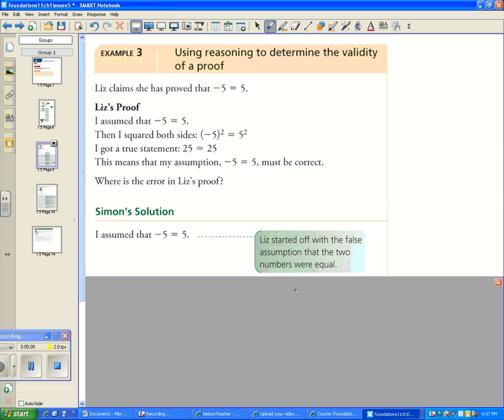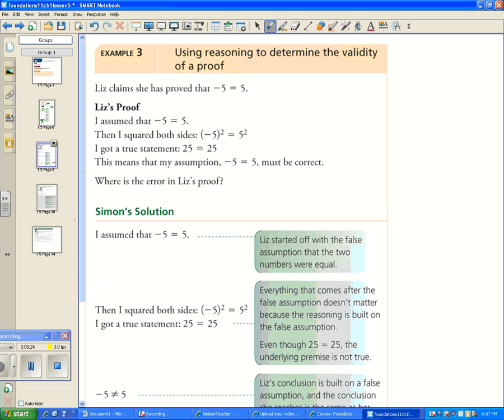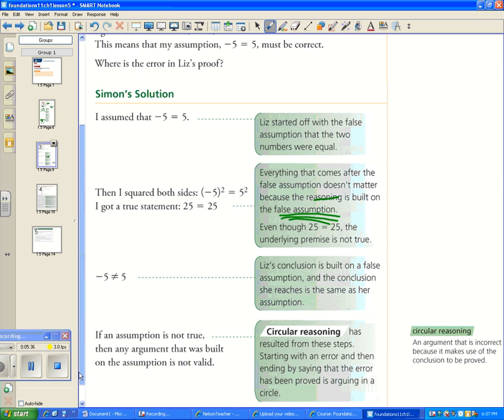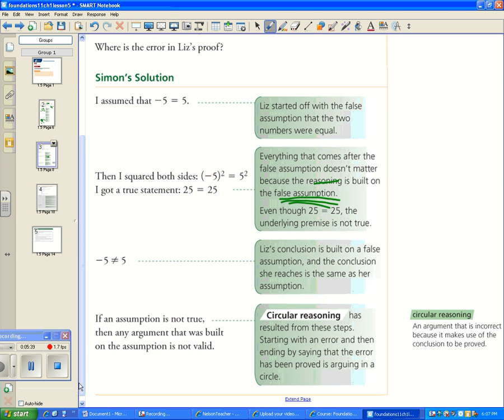Liz started off with a false assumption that two numbers are equal. So right away, by saying something that's false, it's just like if someone starts lying to you, you're not going to believe anything they say after that. She started off with a false assumption. Everything after that was sound, but it doesn't matter because the reasoning is built on the false assumption. So Liz's conclusion is built on a false assumption, and the conclusion she reached is the same as her assumption. If the assumption is not true, then any argument that was built on that is not valid. And this is called circular reasoning. It's an argument that is incorrect because it makes use of the conclusion to be proved.